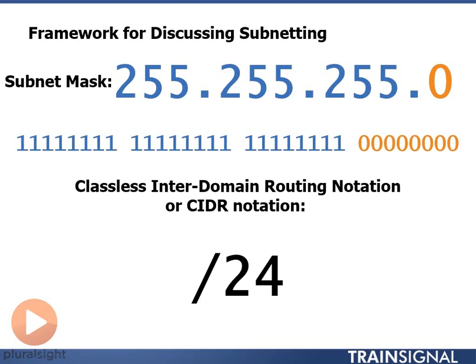The subnet mask can be written in several different ways. We traditionally see it written as 255.255.255.0 or something similar. If we write that out in binary, we see that it's eight ones for the first octet, eight ones for the second, eight ones for the third, and the last octet is all zeros. We've come up with a shorthand notation called CIDR notation, or classless inter-domain routing notation. All we do is count up the number of bits in the network portion and write that number down — that becomes our mask.